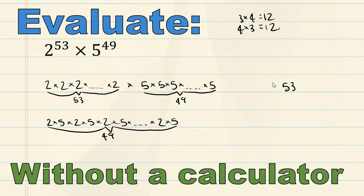We had 53 2s. We've used 49 of them, meaning we've got 4 2s left over. Now, I can't just get rid of those 2s, so I need to write that at the end, that we've got 4 2s left over, like so.